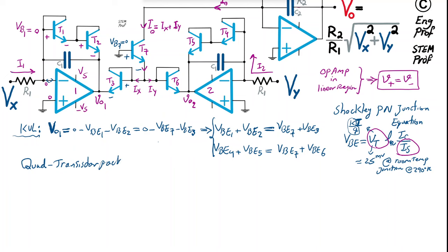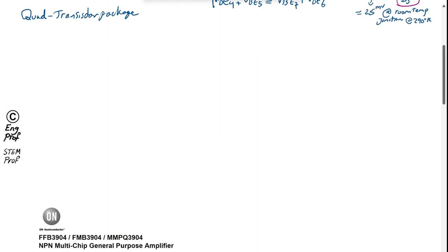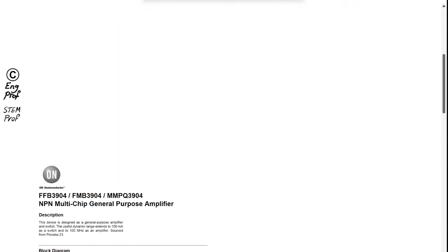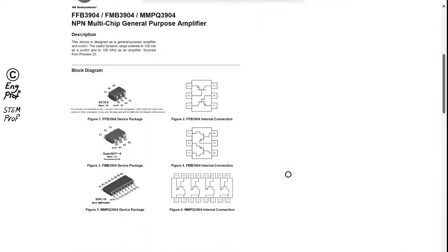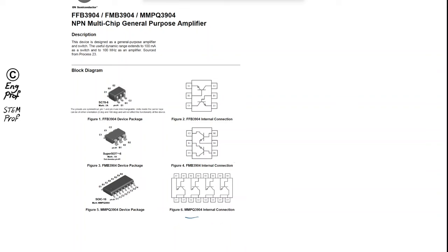As a specific example, the MMPQ3904 from OnSemi is a quad NPN general-purpose transistor package. The MAT14 or MAT12 series from Analog Devices is another option. These provide four well-matched transistors in a single package.